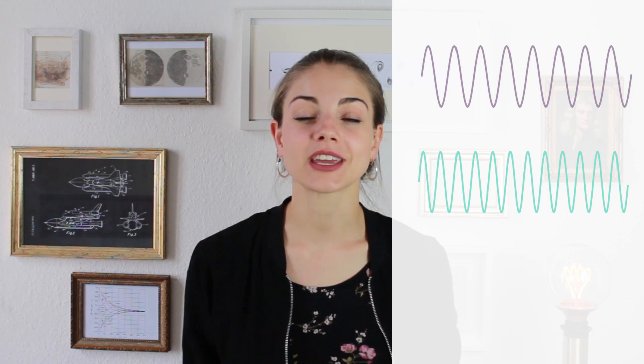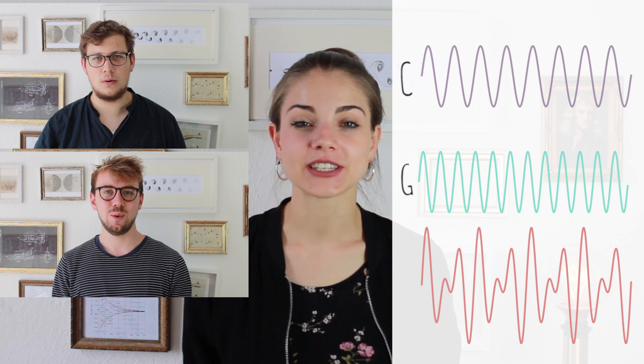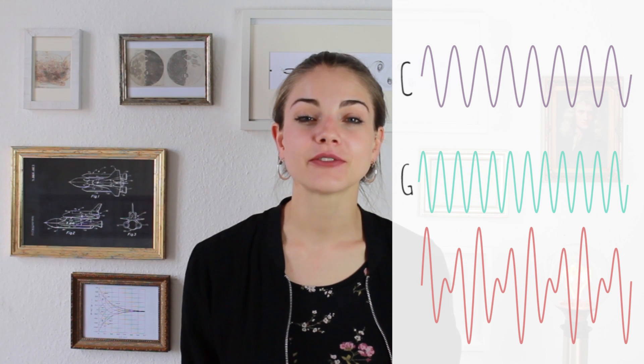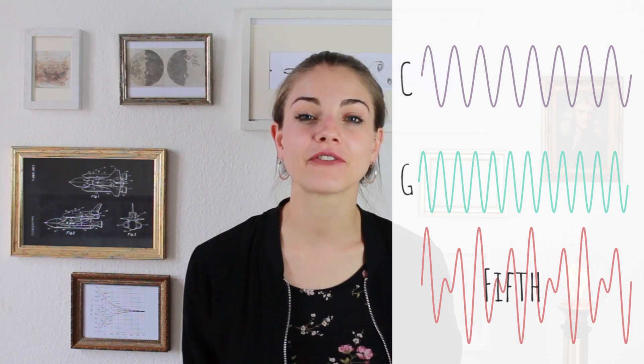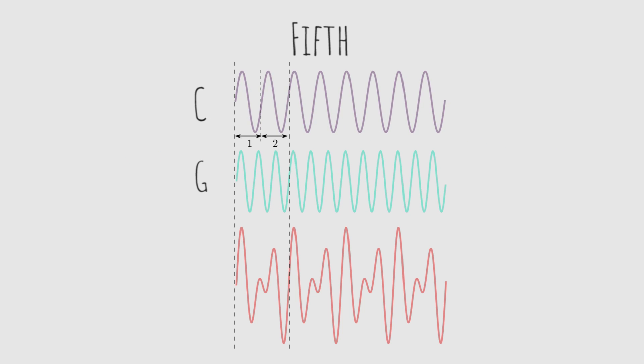It is similar with a C and a G played or sung together. The interval between these notes is called a fifth. The frequency of G is the frequency of C times 3/2. So the superposed wave repeats after two periods of C or three periods of G. As you can see, this pattern also looks pretty regular, and therefore the two notes played together sound good.